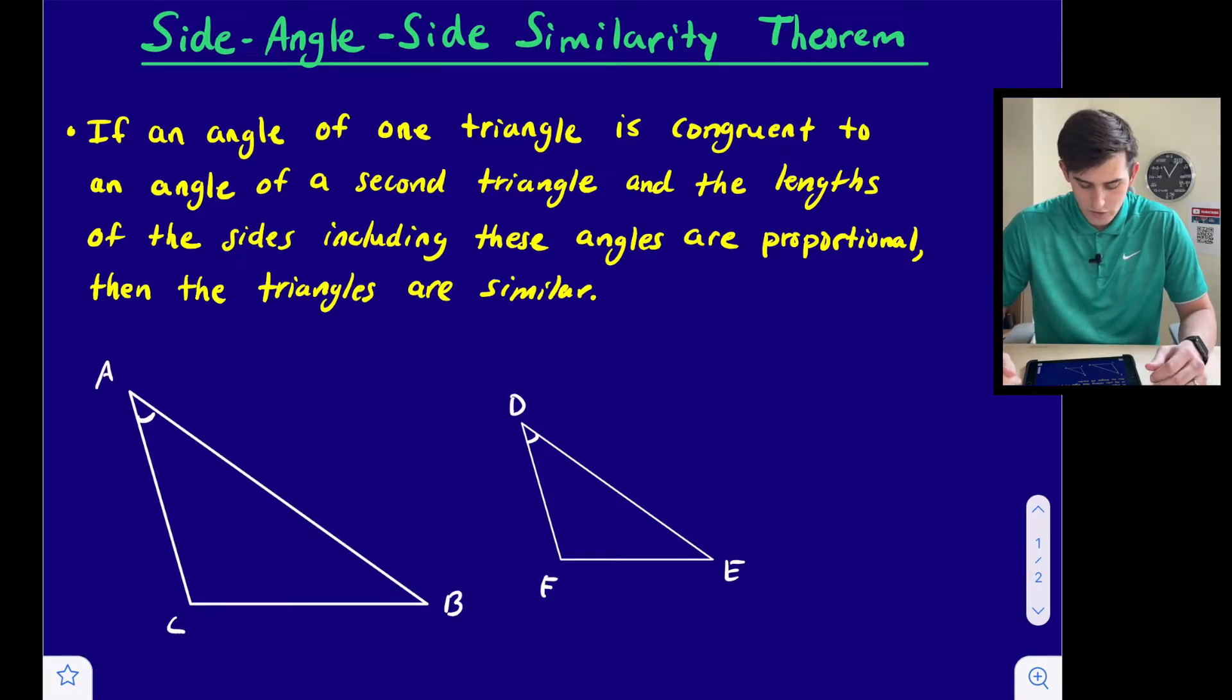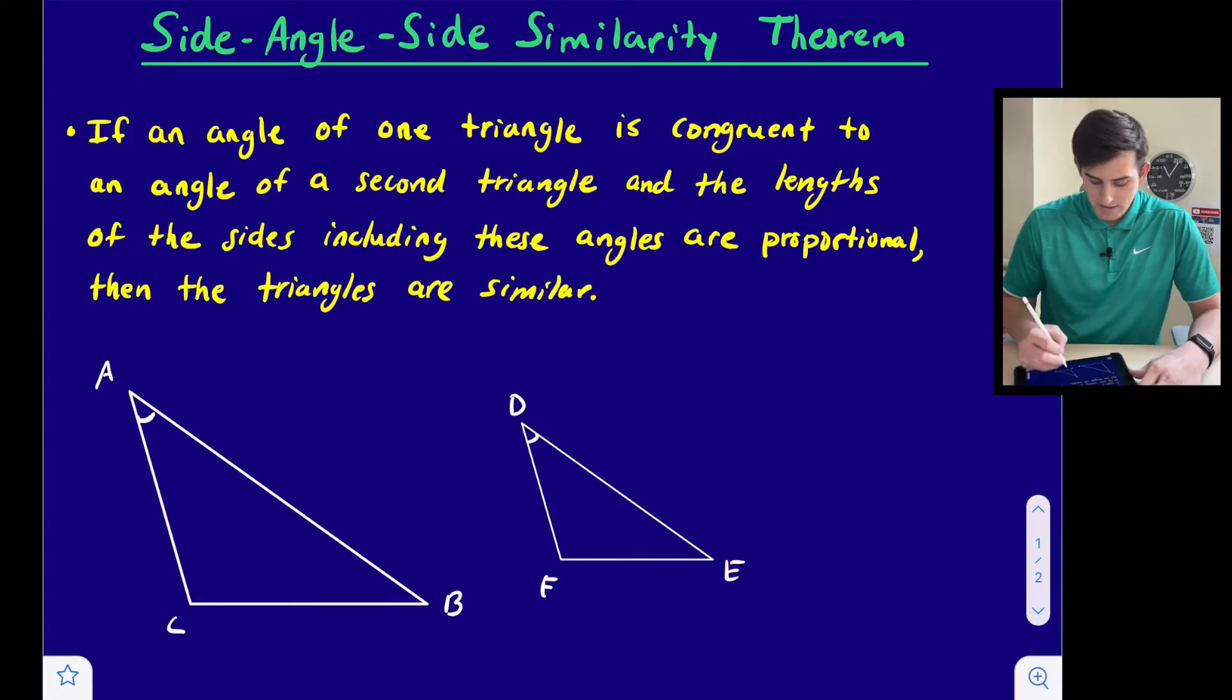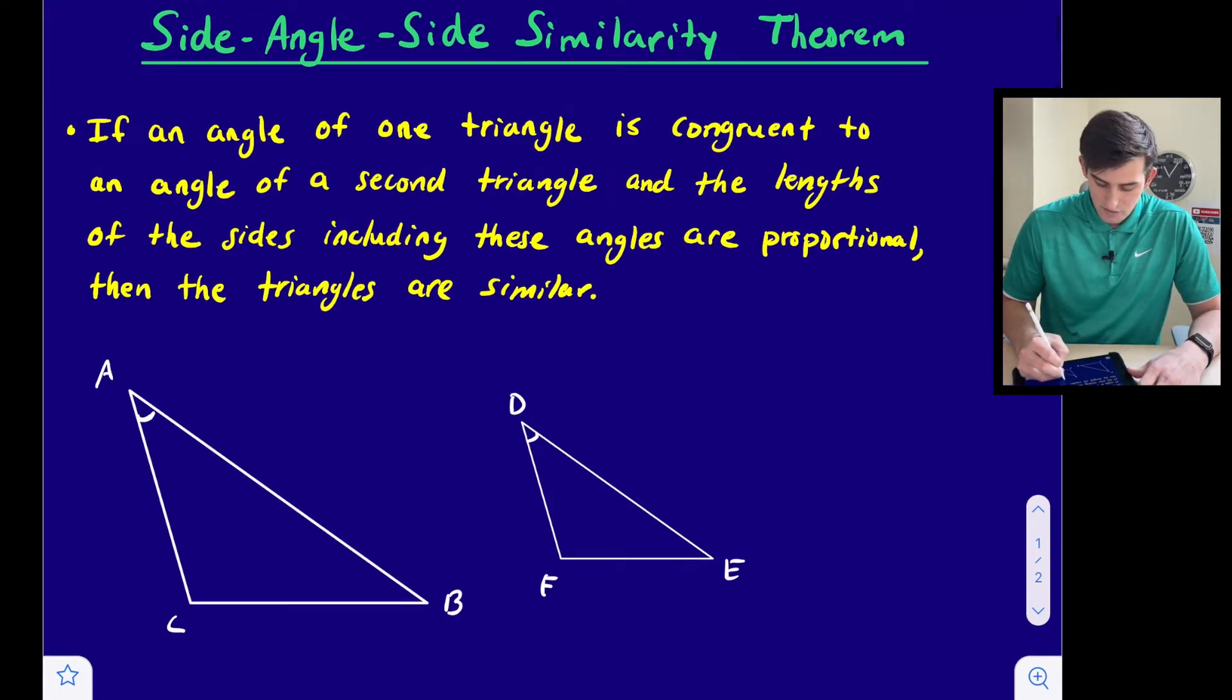It says if an angle of one triangle is congruent to an angle of a second triangle, and the lengths of the sides including these angles are proportional, then the triangles are similar. We have two triangles here, triangle ABC and triangle DEF, and we see that angle A is congruent to angle D.